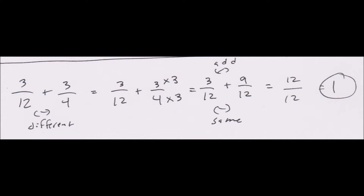Twelve is a multiple of four, so all you have to do is multiply four by three to get twelve. Whatever you do to the bottom number, you also have to do to the top number. So you multiply the numerator by three as well. This gives you three-twelfths plus — and for three-fourths, you multiply by three to get nine-twelfths.